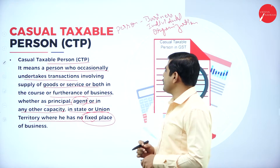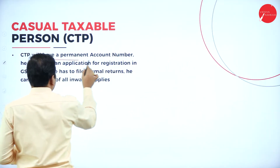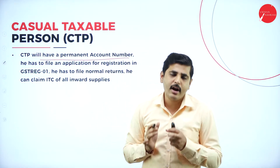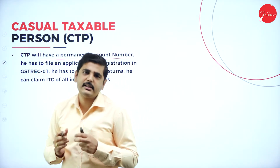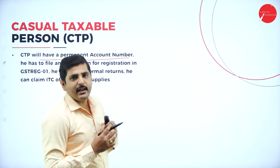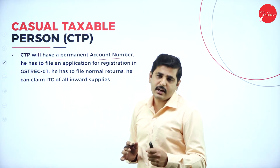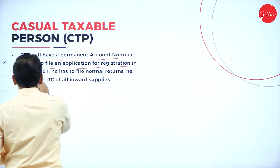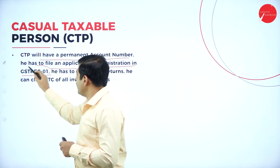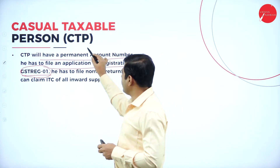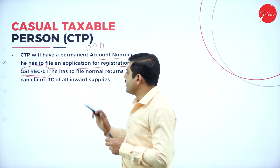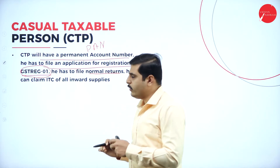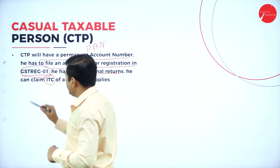A casual taxable person will have a permanent account number (PAN). On the basis of PAN, even though he conducts business activity or transactions in other states, not only in a single state, we can calculate his total transaction at the end of the year and levy the tax accordingly. He has to file an application for GST registration in Form GST REG-1 with a PAN number. He has to file a normal return - no special return form is required.